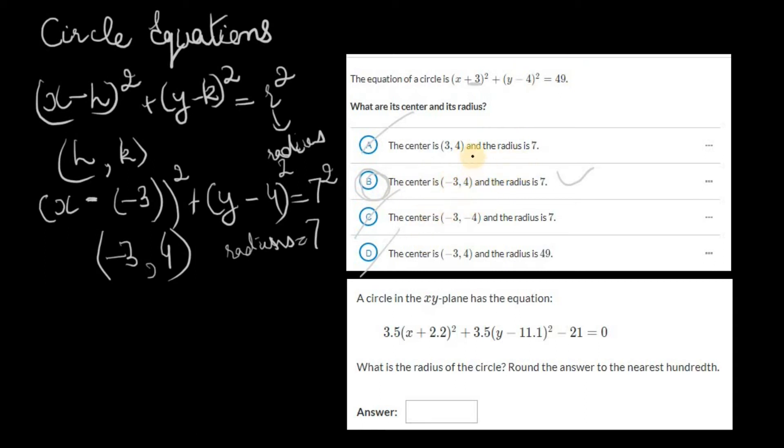For the second question, I encourage you to once again pause the video and try it out in your head. Assuming you've given it a go, let's start reading it. A circle in the xy-plane has the equation 3.5(x + 2.2)² + 3.5(y - 11.1)² - 21 = 0. What is the radius of the circle?